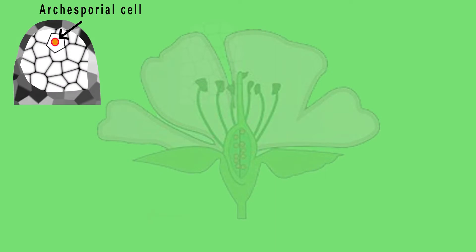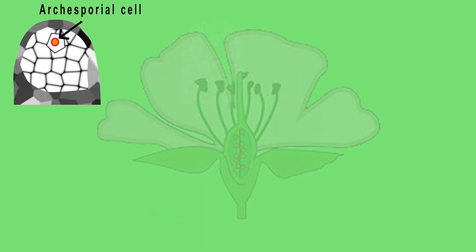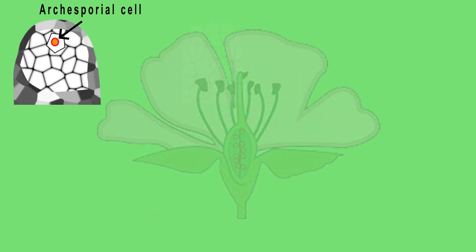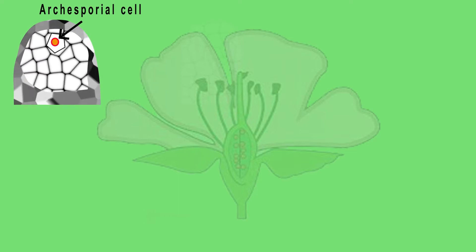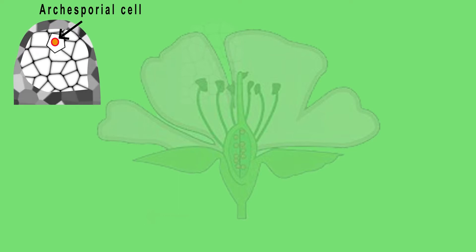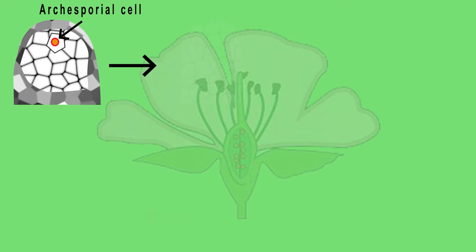As the ovule develops, a single hypodermal cell in the nucellus becomes enlarged and functions as Archisporium. In some plants, the Archisporial cell may directly function as the Megaspore mother cell.